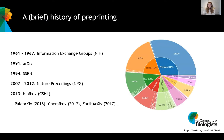In 1994 we saw the launch of SSRN, which is a preprint server for the social sciences, and then in 2013 we saw the launch of bioRxiv by Cold Spring Harbor Labs — this is the main preprint server for research in biological sciences. Subsequent to that we've seen the launch of similar archive-type preprint repositories for different research areas, such as PaleorXiv, ChemRxiv, and EarthArXiv for paleontology, chemistry, and the geosciences, though this list isn't exhaustive. There are many different preprint servers for lots of different research disciplines.